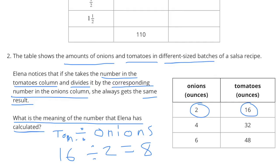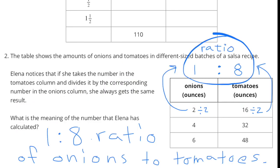16 tomatoes divided by 2 onions. 16 divided by 2 is 8. So for every 2 onions, she has 16 tomatoes. That's the same as a ratio of 1 onion to 8 tomatoes. So she's discovered that there's a ratio of onions to tomatoes of 1 to 8. A 1 to 8 ratio is the same as a 2 to 16 ratio, or a 4 to 32 ratio, or a 6 to 48 ratio.